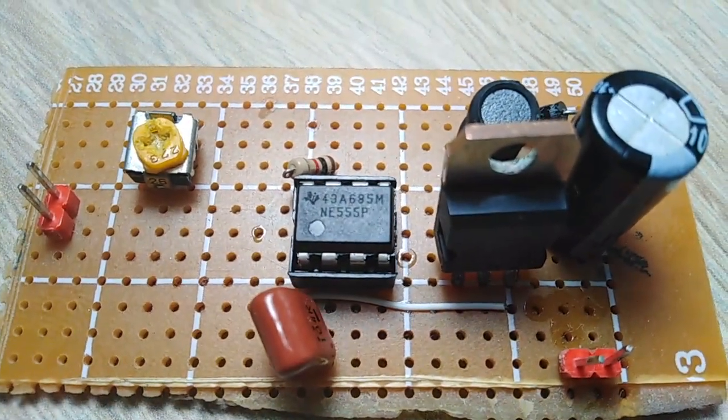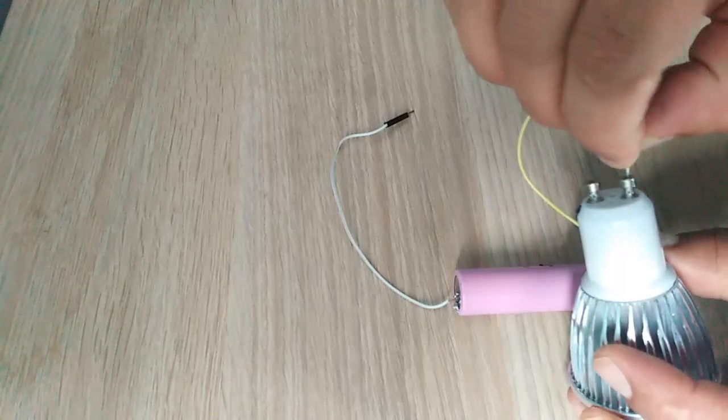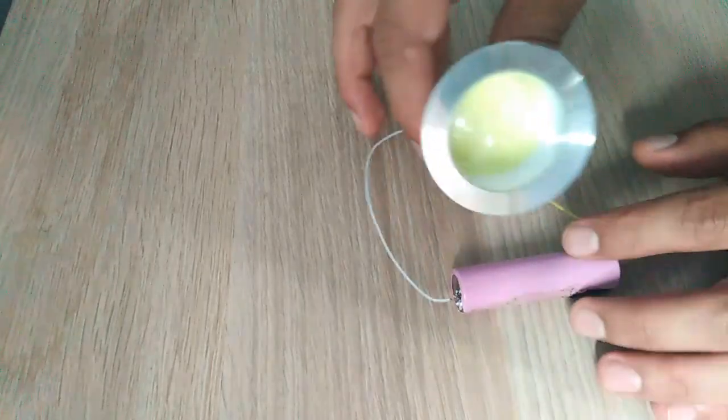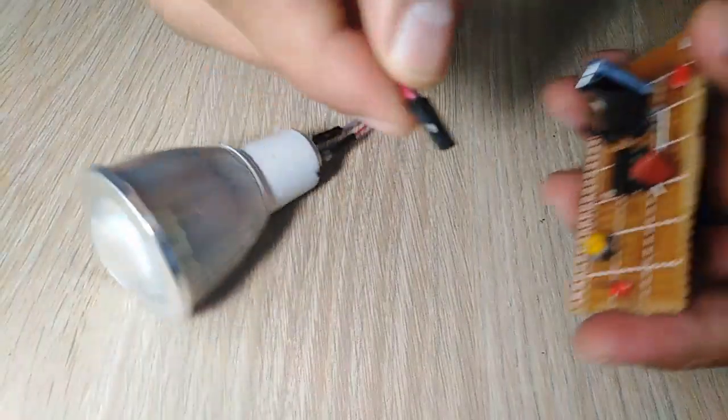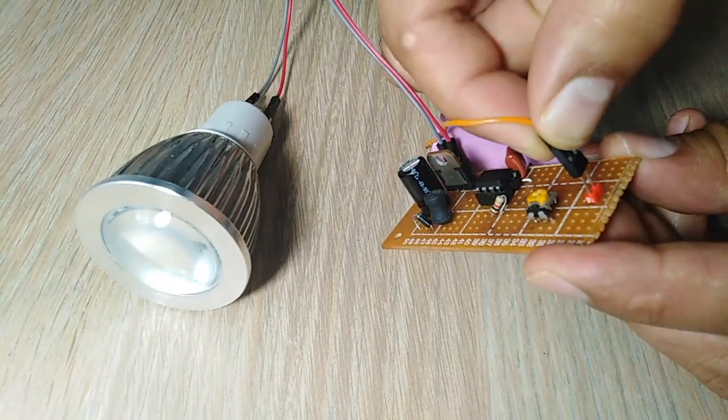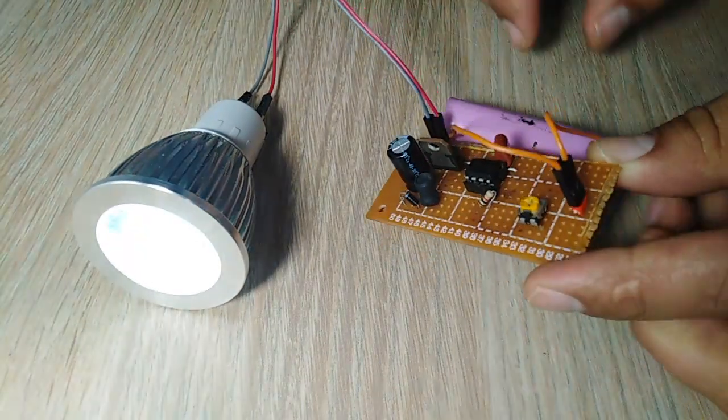And here is the final appearance. I try to light up the lamp with the 3.7 volt battery, but it doesn't work. So now I use my boost converter and connect my 3.7 volt battery to the input, and it's working.